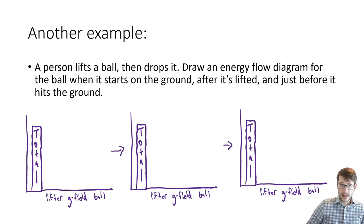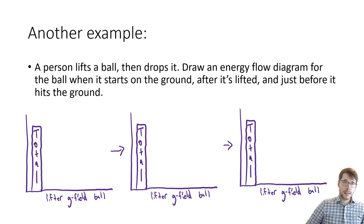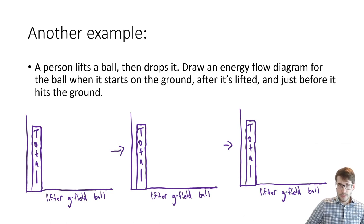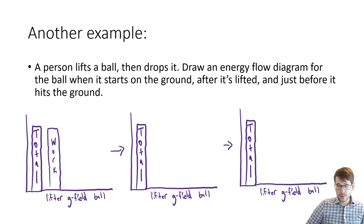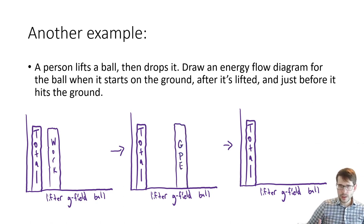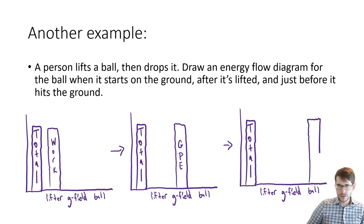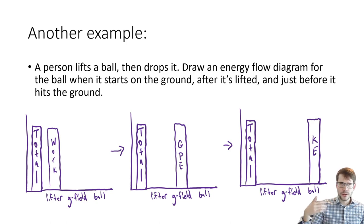For our last example — a person lifts a ball and then drops it — we'll do an energy bar chart. At the beginning, all of the energy is in the lifter as work they're about to use. That energy then goes into the gravitational field when the ball is lifted up. We're talking about the energy used in this process, which is why all the energy went from the lifter into the gravitational field. Then as the ball is dropped, the energy flows from the gravitational field into kinetic energy in the ball. This follows energy step by step from container to container, making sure we understand what's going on.